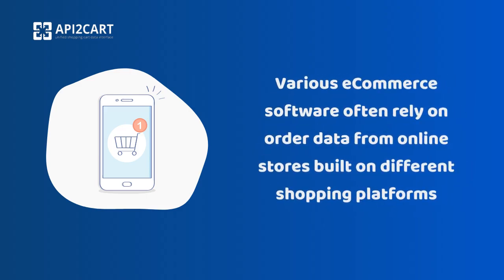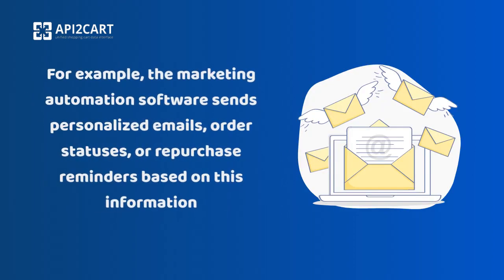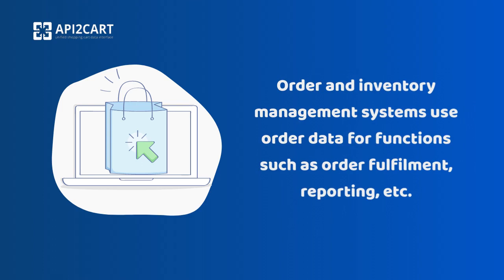Various e-commerce software often rely on order data from online stores built on different shopping platforms. For example, the marketing automation software sends personalized emails, order statuses, or repurchase reminders based on this information. Order and inventory management systems use order data for functions such as order fulfillment, reporting, etc.